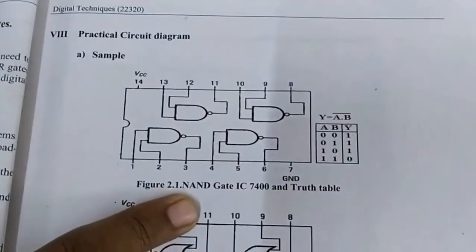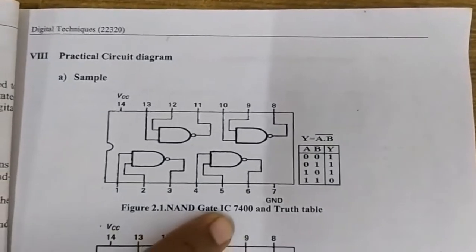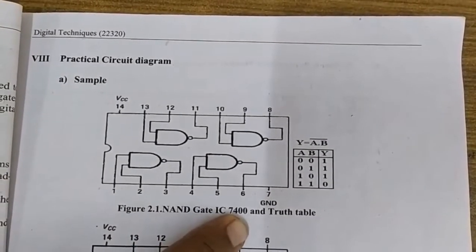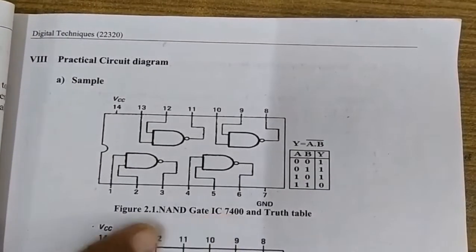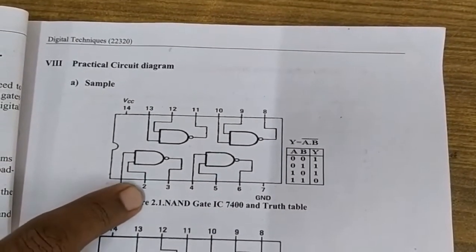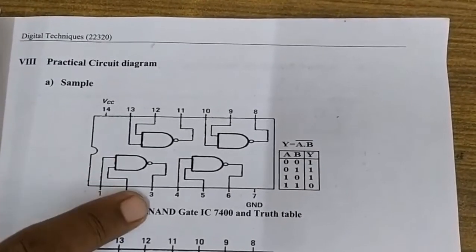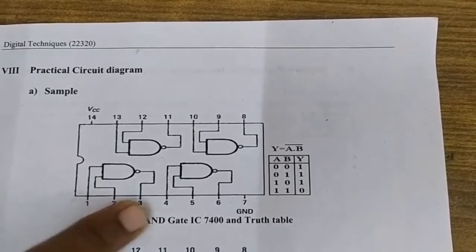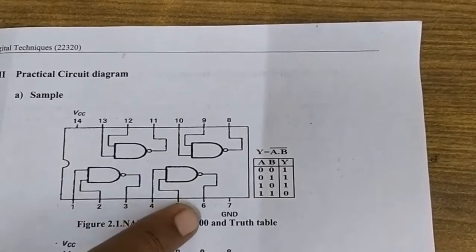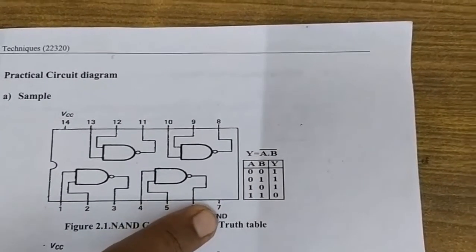Figure 2.1 shows the internal structure of NAND gate IC. IC 7400 works as a NAND gate — it is a 14-pin IC. Pin number 1 and 2 act as inputs to the first NAND gate and its output is obtained on pin number 3. Similarly, pins 4 and 5 are inputs of the second NAND gate and output is obtained on pin number 6.